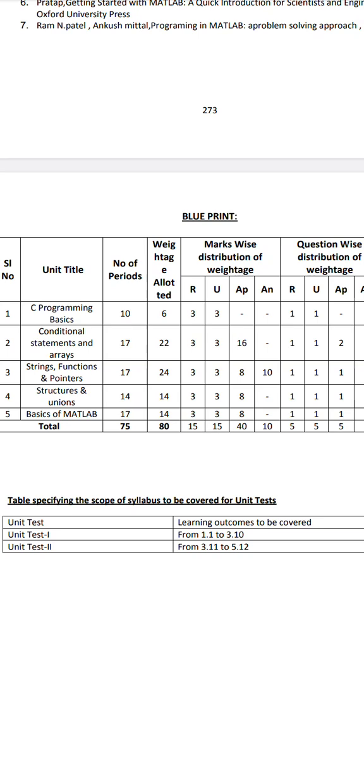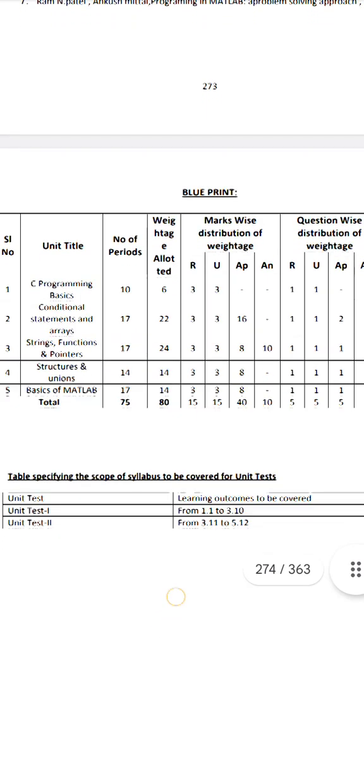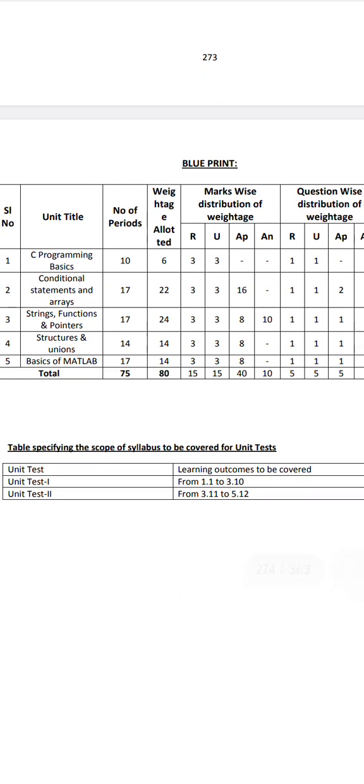In the first unit, there are only 2 short questions — 3 marks and 3 marks. In the second unit, there are 2 short questions along with 2 eight-mark questions. In the third unit, there is 1 ten-mark direct question and 1 eight-mark question, plus 2 short questions. In the fourth unit, there are 2 short questions. In the fifth unit, there is 1 eight-mark question and 2 short questions.